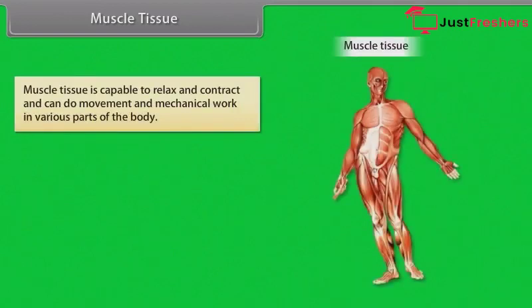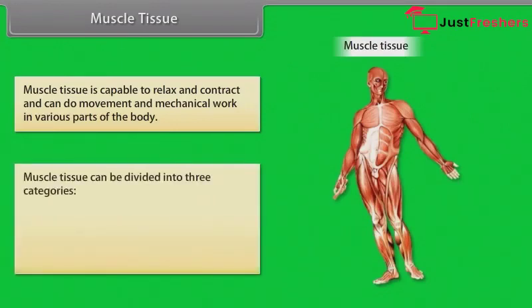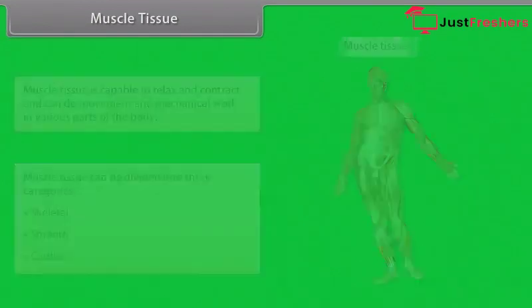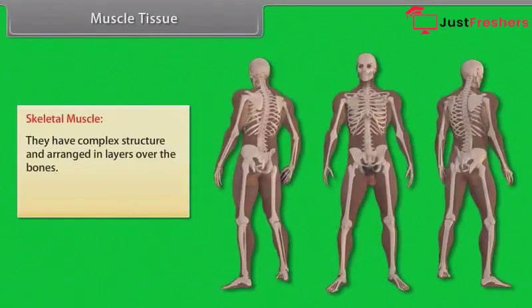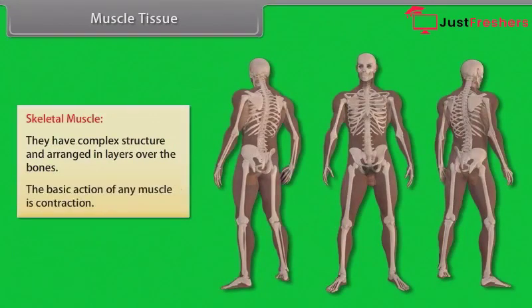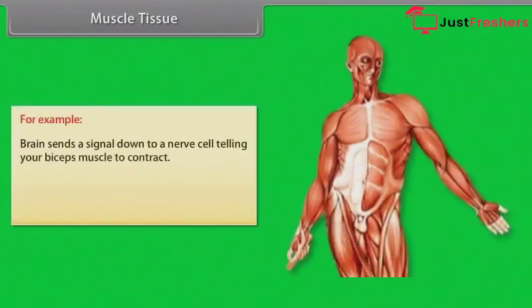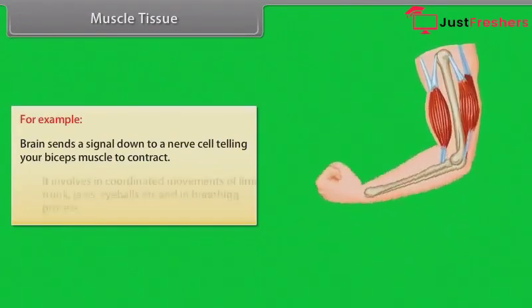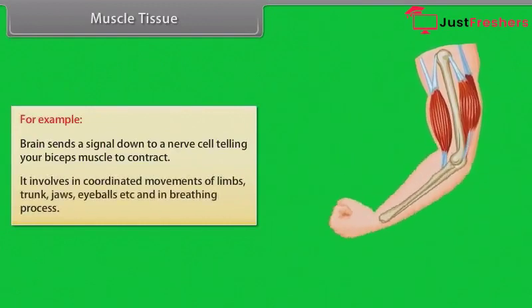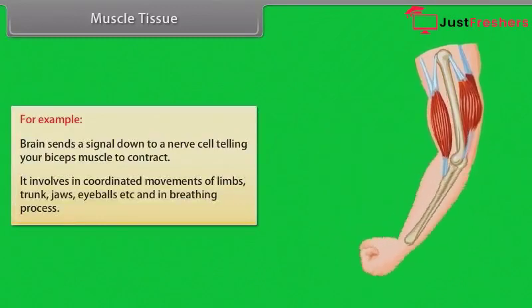Muscle tissue is capable of relaxing and contracting, and can do movement and mechanical work in various parts of the body. Muscle tissue can be divided into three categories: skeletal, smooth, and cardiac. Skeletal muscles have a complex structure and are arranged in layers over the bones. The basic action of any muscle is contraction — for example, the brain sends a signal down a nerve cell telling the biceps muscle to contract. Skeletal muscles are involved in coordinated movements of limbs, trunk, jaws, eyeballs, and in the breathing process.